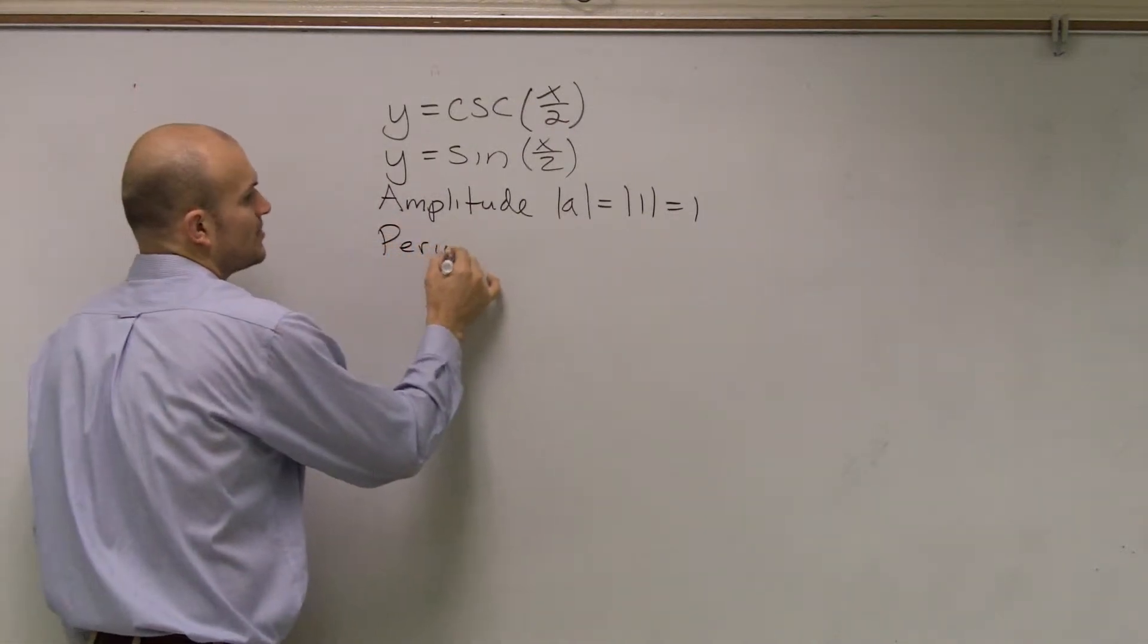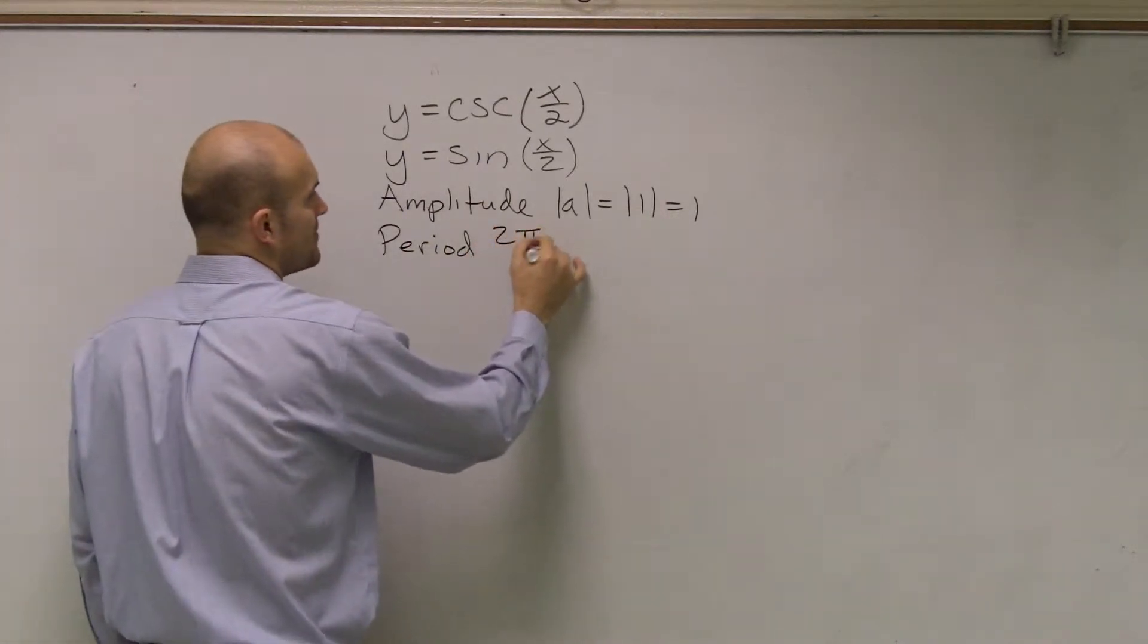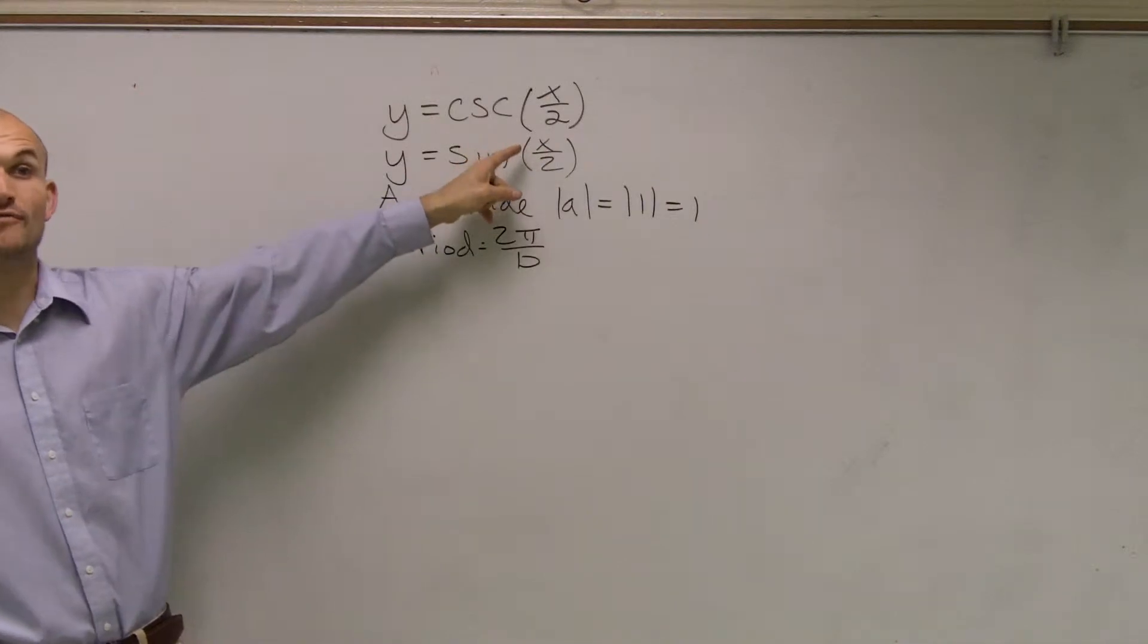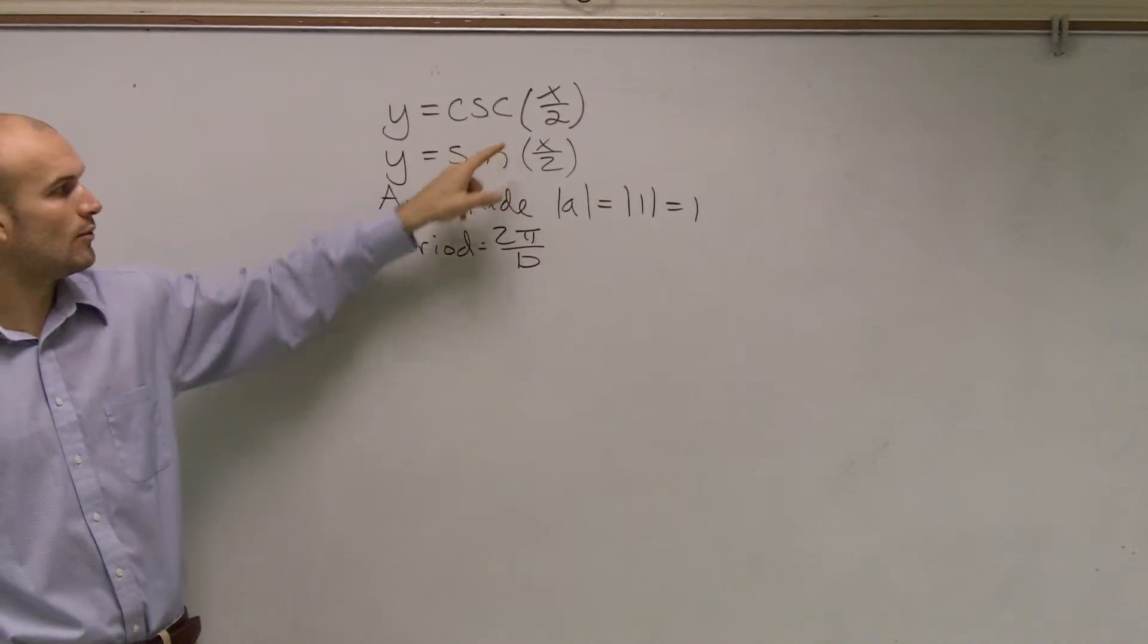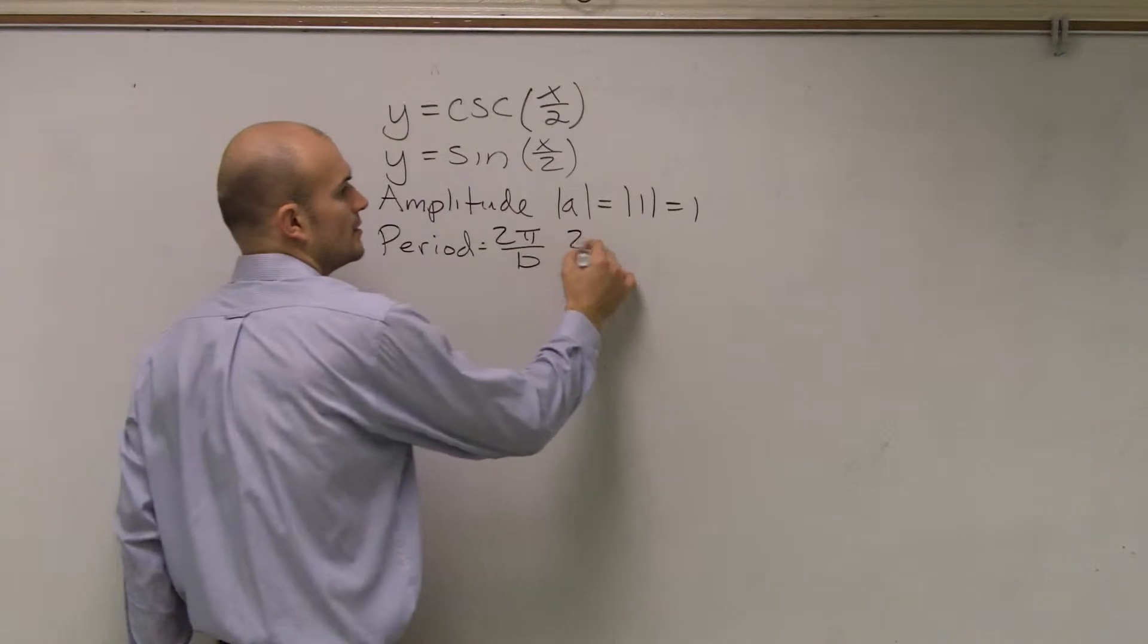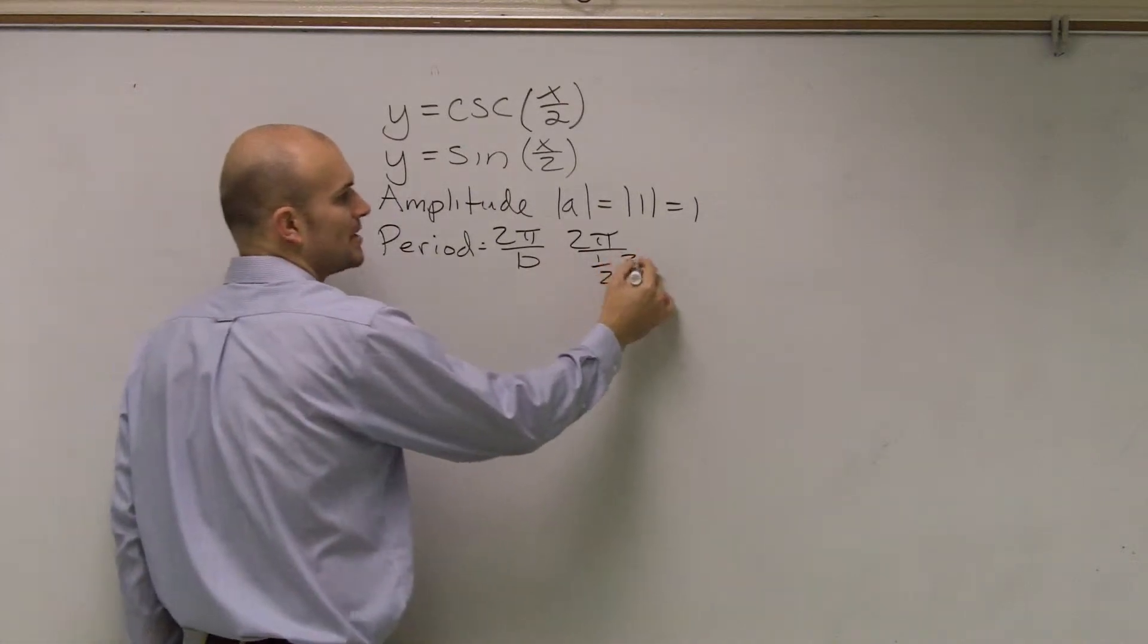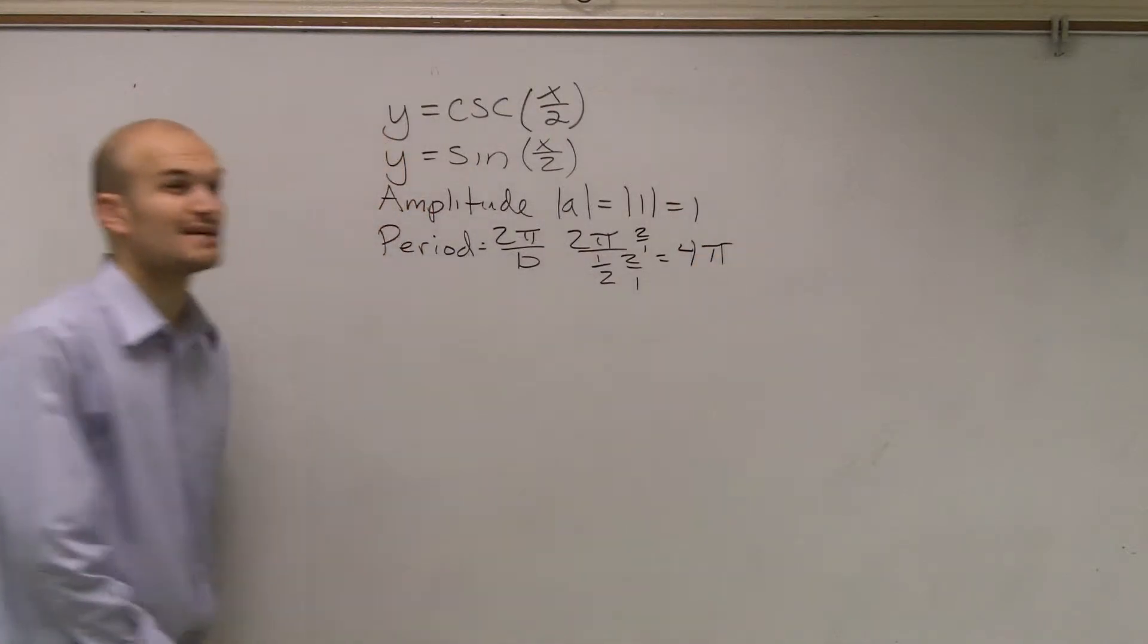Next thing we're going to look at is the period. Remember, the period for our sine and cosine graph was 2π over b. Well, here, remember your b was your number that was in front of your x. Well here you can say there's a 1 in front of the x, and that 1 is being divided by the 2. So therefore, when you have 1 divided by the 2, my b is now going to be 1 half. So you could say 2π over 1 half. And remember, when we have to get rid of the fraction on the bottom, we multiply it by the reciprocal. So then we'll end up, we get 4π as our period.